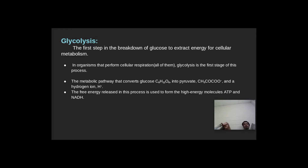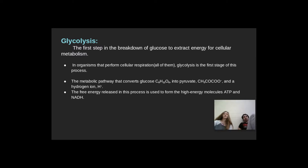It's found in organisms that perform cellular respiration, which is all of them. Glycolysis is the first stage in this process. It's also the metabolic pathway that converts glucose into pyruvate and the hydrogen ion H+. The free energy released in this process is used to form the high-energy molecules ATP and NADH.